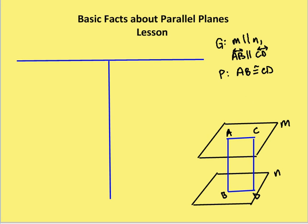All right, so two problems. First one: I have two planes, M and N, which are parallel to each other. And I have two lines, AB and CD, which are also parallel to each other. And I want to prove that AB is congruent to CD.